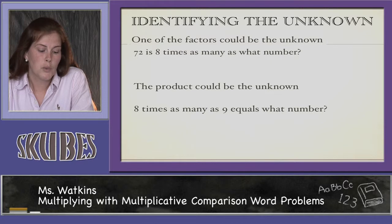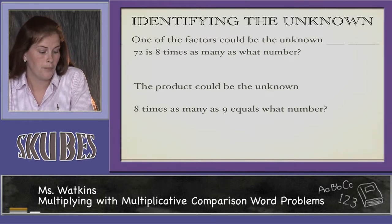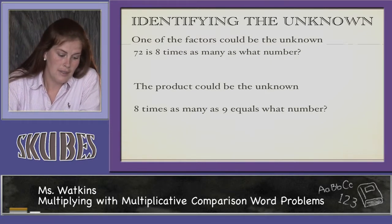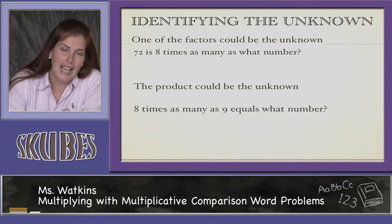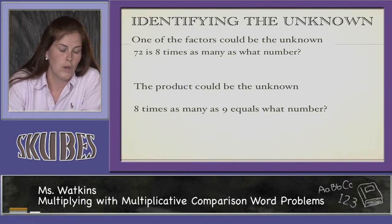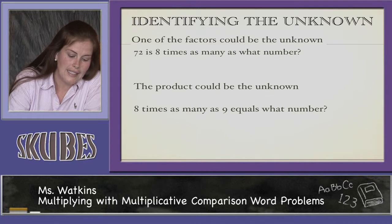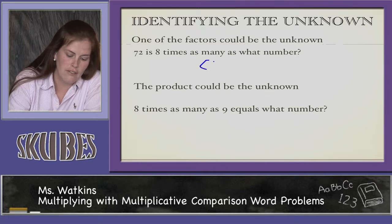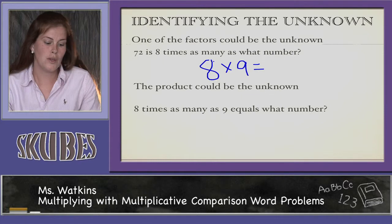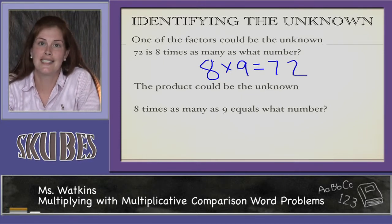In some problems, we will have to identify the unknown. One of the factors could be the unknown. 72 is 8 times as many as what number? Well, we know 8 times 9 equals 72. So 72 is 8 times as many as 9.